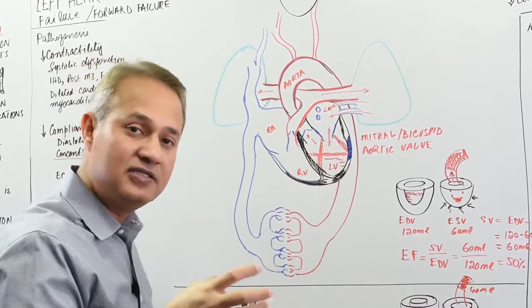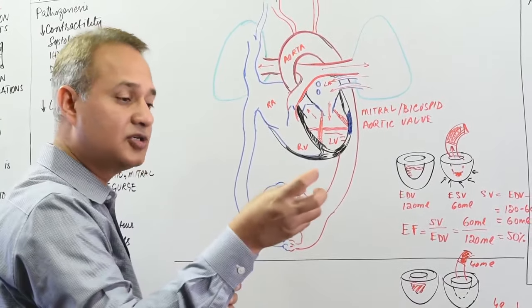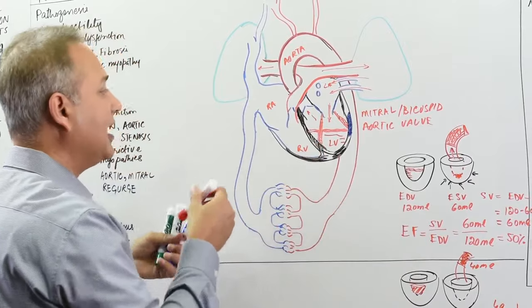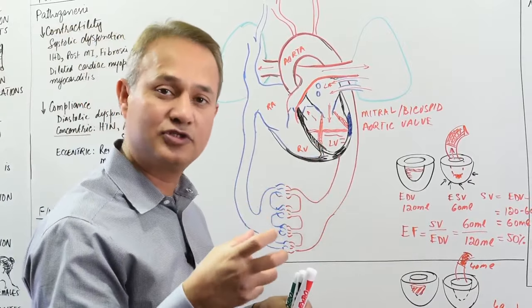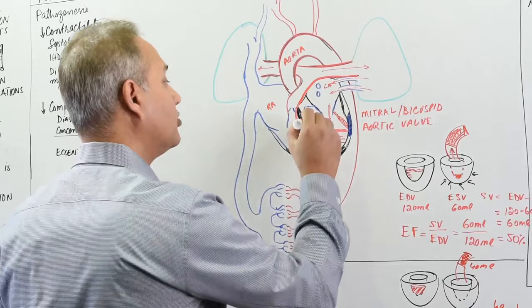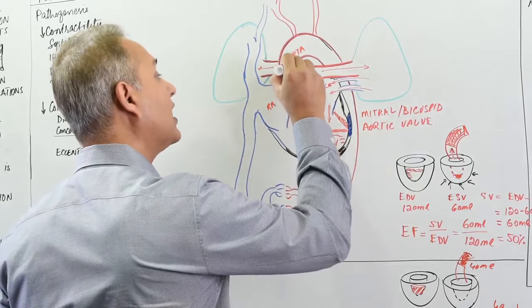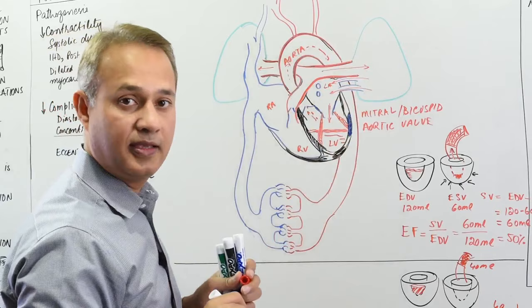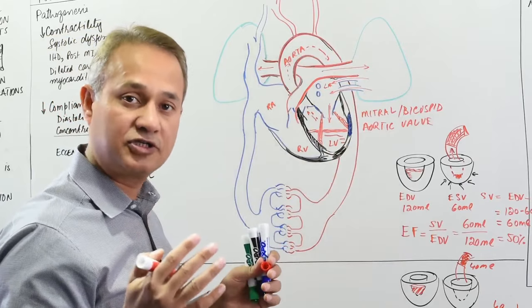When this damaged heart, when this injured heart is trying to systole now, trying to contract now, it will not be able to generate enough force to move the blood or enough blood out in the aorta and to the body. That is the basic problem. That is systolic dysfunction.